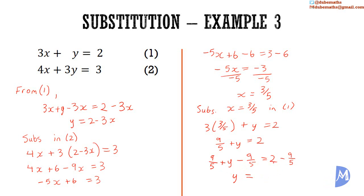To show the working: 2 is the same as 2 over 1. The LCM of 1 and 5 is 5. To get 2 over 1 as a fraction over 5, you multiply the denominator by 5, and multiply the numerator by the same: 2 multiplied by 5 is equal to 10. So we have 10 over 5 minus 9 over 5 — 10 subtract 9 is equal to 1 — giving y is equal to 1 fifth. The solution to this simultaneous equation is x equals 3 fifths and y equals 1 fifth.